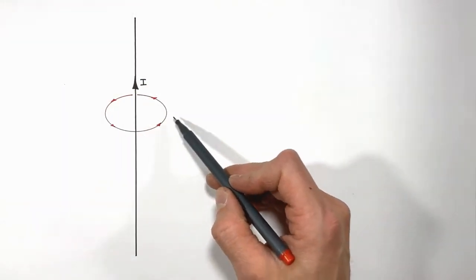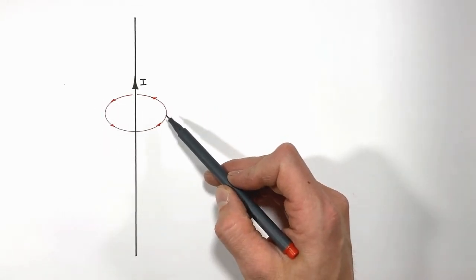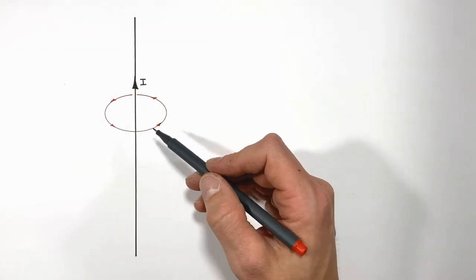A circular magnetic field traveling in one direction around the wire.